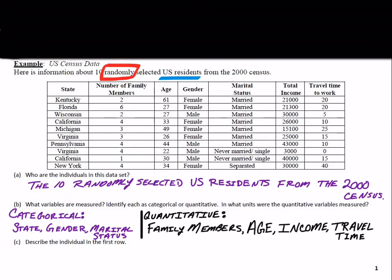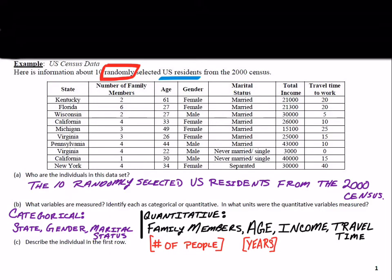For the units of the quantitative variables: family members is measured in number of people; age is in years; income is in dollars; and travel time to work is in minutes — hopefully not hours! These all make sense to take an average for.